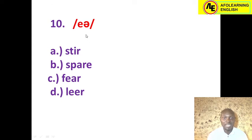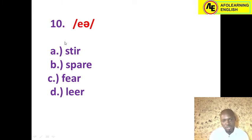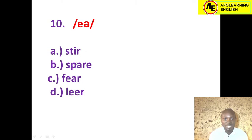Number ten: another diphthong /eə/. Students should not confuse this with /ɪə/. The /eə/ sound is often represented by -AIR, -ARE, or -EAR combinations. Option B contains -ARE, so the correct answer is 'spare.' Option A has just a single vowel sound, not a diphthong. Option C is 'fear' — that contains /ɪə/, don't confuse the two. Option D 'near' — also /ɪə/, not the answer. The correct answer is spare.